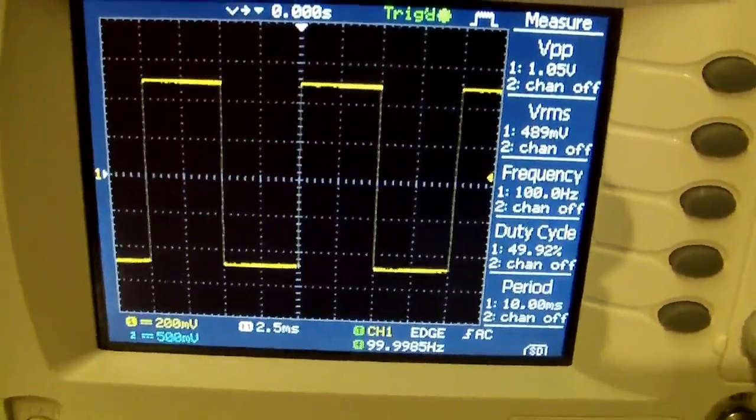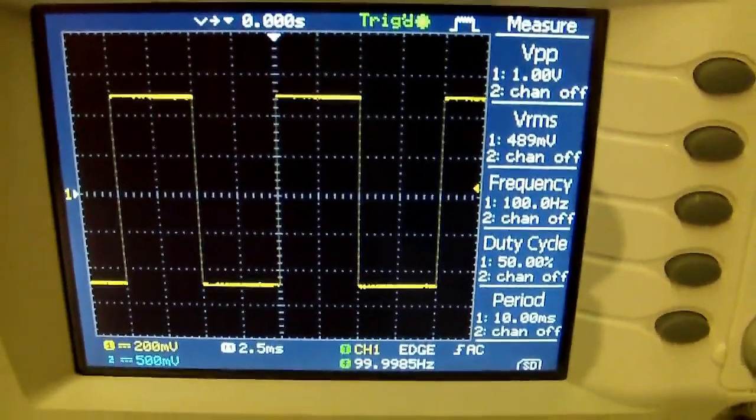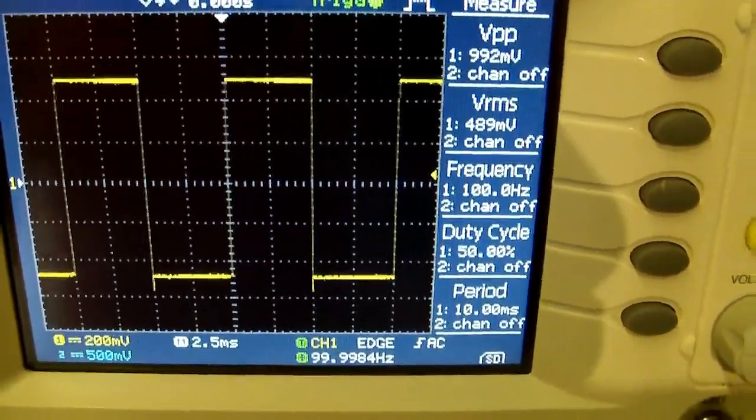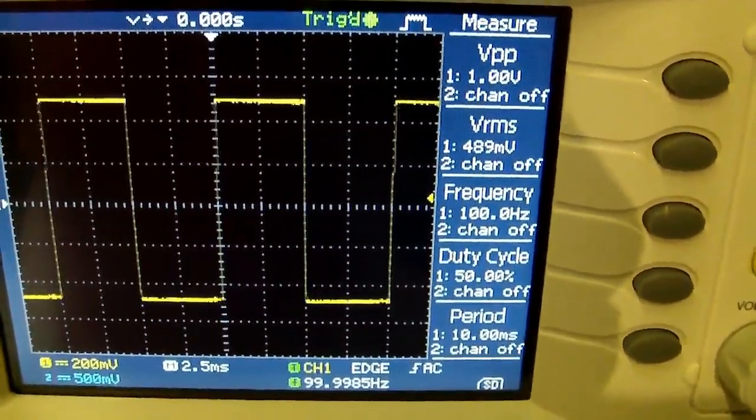We hooked up the cable to the signal generator and we set the signal to a 100 Hz square wave. As you see the square wave is almost perfect, no problem.